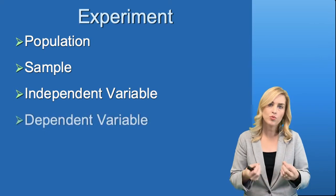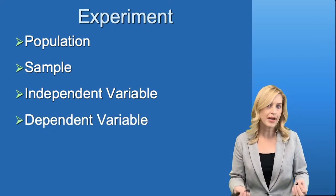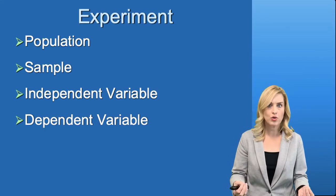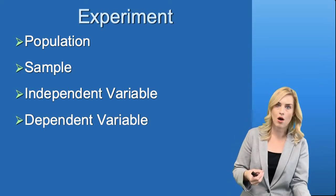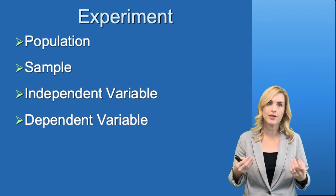The dependent variable is what we're trying to measure. Maybe we want to measure brake reaction time in those different types of cars. Do people brake differently in a truck than they do in a small car? That's the dependent variable. It's what the researcher is trying to measure.